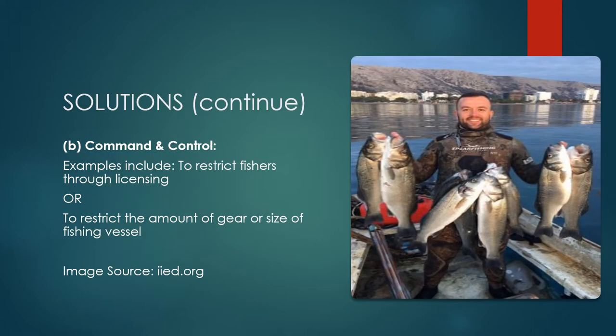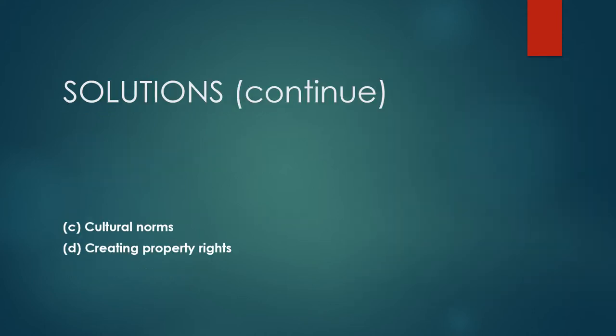Command and control refers to regulating and controlling fishermen — setting up laws and restricting them from certain things like their gear. All these solutions should be viewed as alternatives to move away from the tragedy of the commons while also trying to solve the problems of bycatch. Cultural norms and creating property rights are all effective solutions, though there are many more. For example, NOAA fisheries in the United States developed and promoted gear designs that exclude non-target species such as sea turtles and sharks, making it easier for these creatures to escape the fishers' nets.